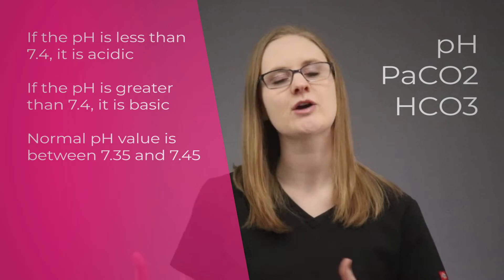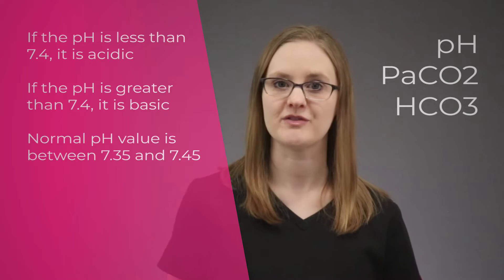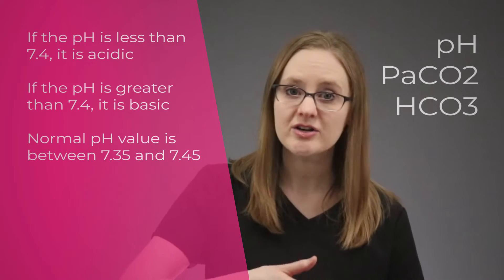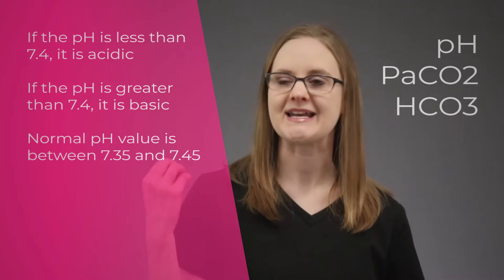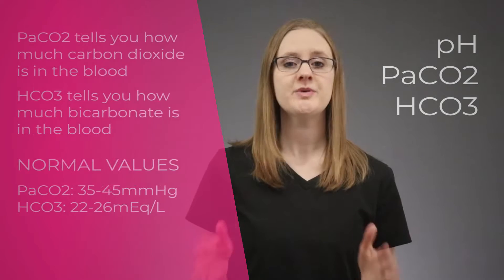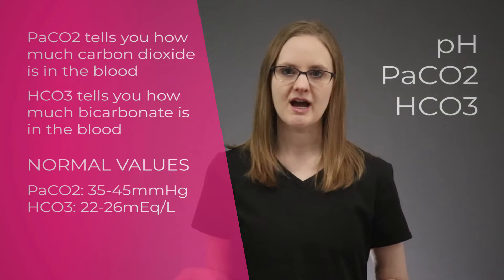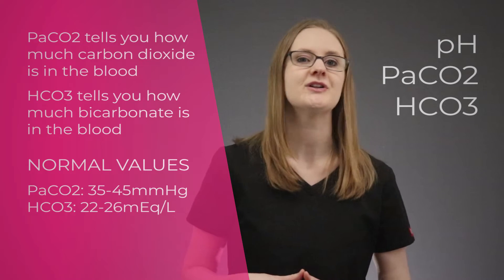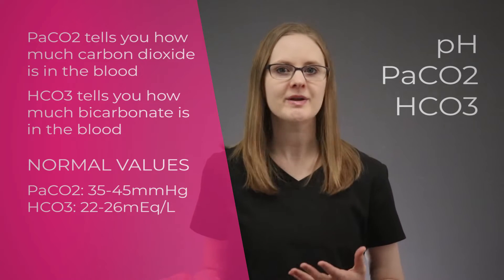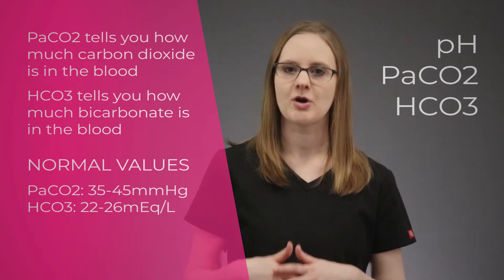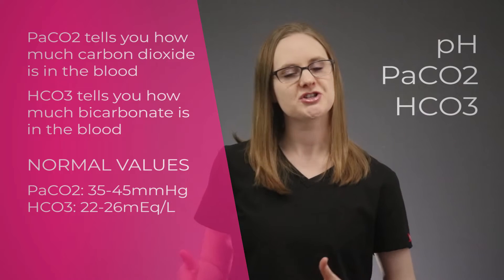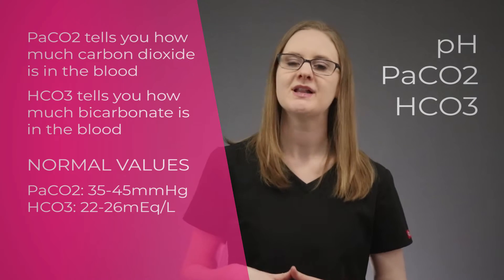Like we talked about in that previous video, the pH will tell you if the blood is acidic or basic. If the pH is less than 7.4, it's acidic; if the pH is greater than 7.4, it's more basic or alkaline. A normal pH value is between 7.35 and 7.45. A normal PaCO2 is between 35 and 45 mmHg, and a normal HCO3 value is between 22 to 26 mEq/L.